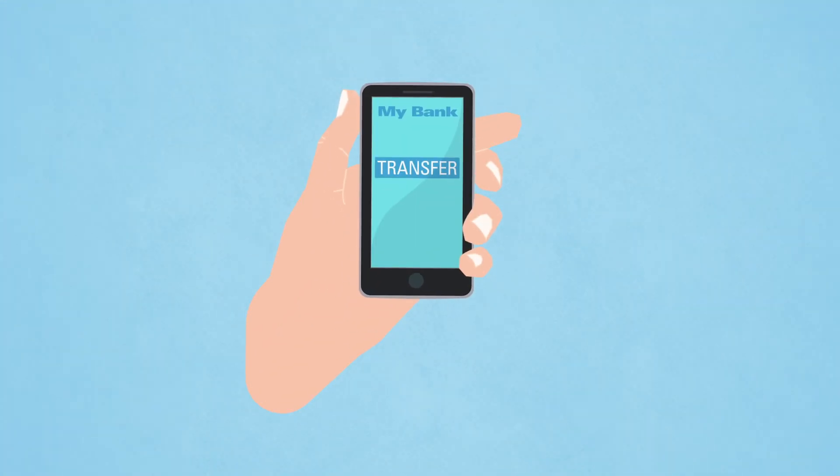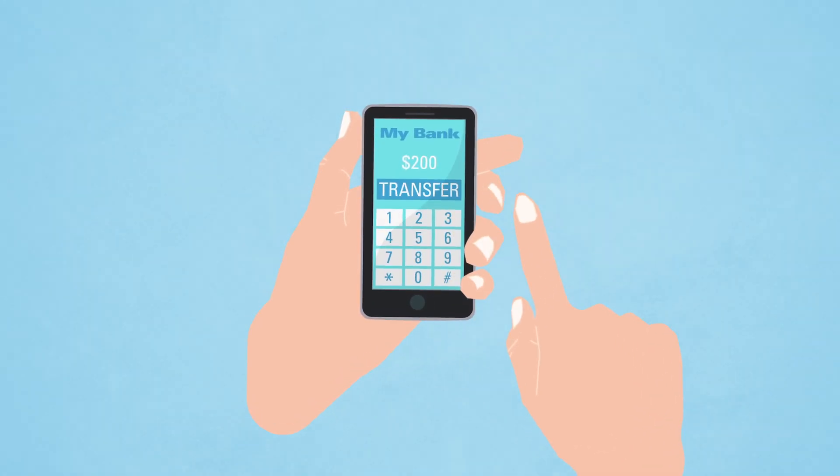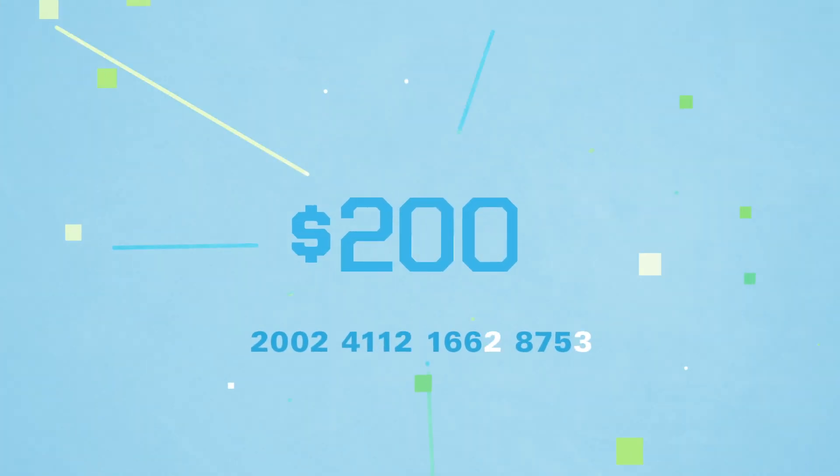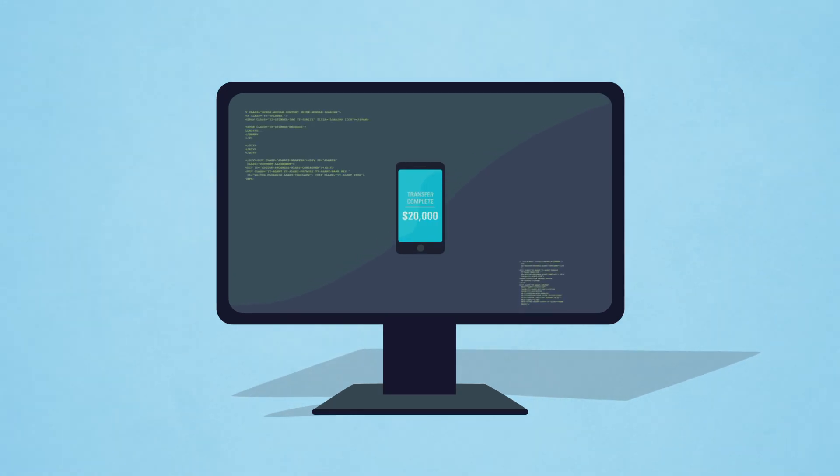One example: you're doing some banking and transferring two hundred dollars to your friends to cover theater tickets. What if there's malware that can change a couple digits and now you're transferring twenty thousand dollars to the hacker? That's very hard for a bank to detect.